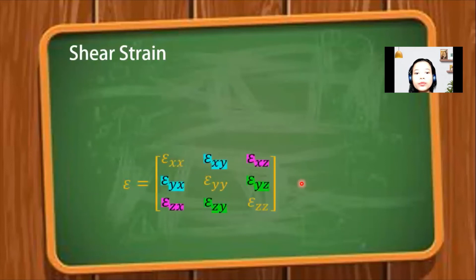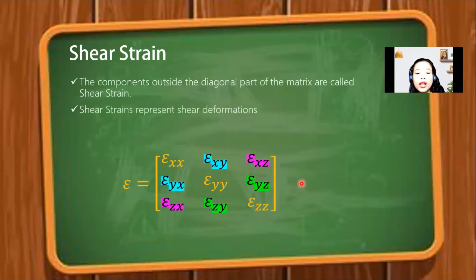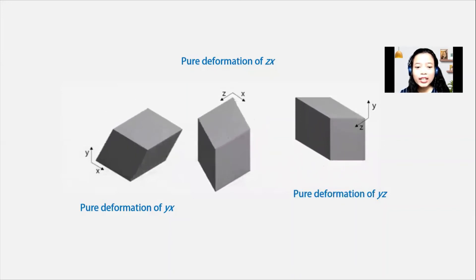For off-diagonal terms in the strain tensor, they are called shear strain. Shear strain represents shear deformation and they have symmetry properties. Here is the illustration.